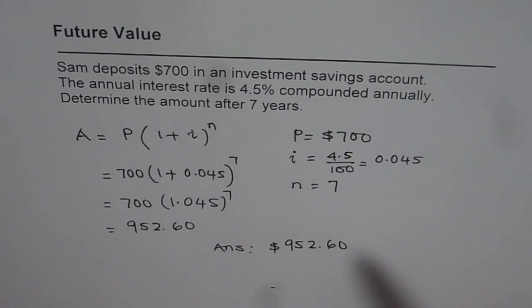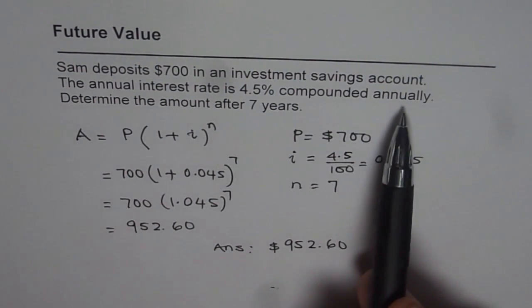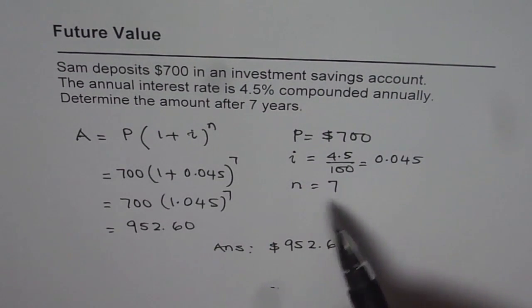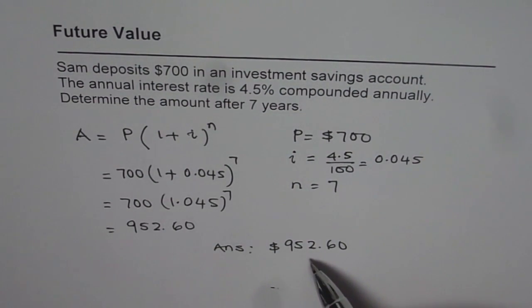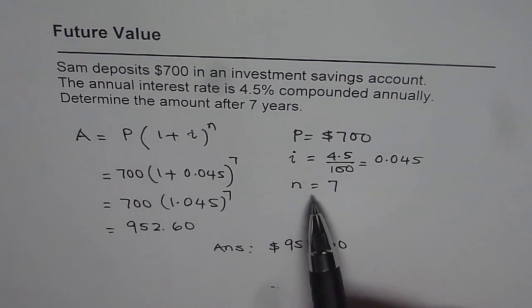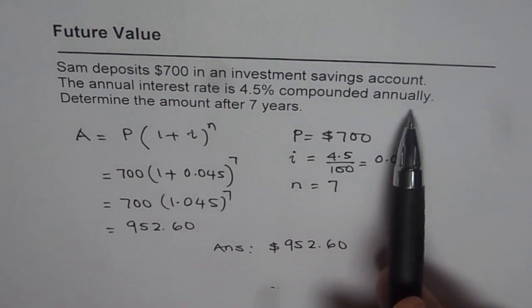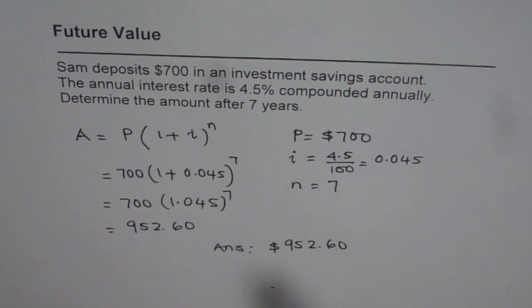Now try to do the same question by changing the compounding period. Make it semi-annually and see by what factor it changes. This will be interesting. How does the value of I and N change if you change the compounding period from annually to semi-annually.